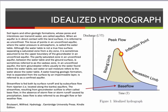In an unconfined aquifer, groundwater refers to the water found below the water table, while soil water or soil moisture refers to the water above the water table. A water-bearing geologic formation separated from the surface by an impermeable layer is referred to as a confined aquifer.